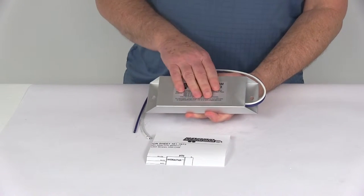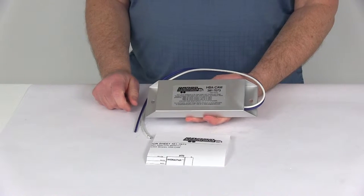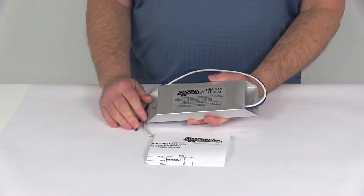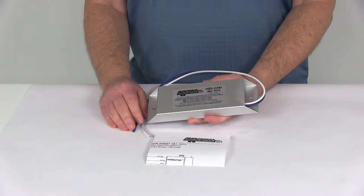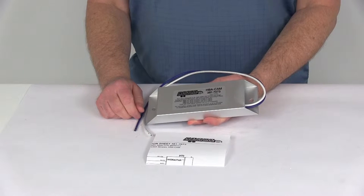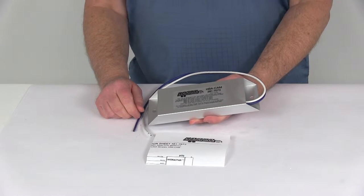This part will allow you to use the newer aluminum colored Hydrostar electric over hydraulic brake actuators with the following OEM brake controllers: the 2007 to 2008 Ford factory brake controller and the 2007 to present GMC Chevrolet factory brake controller.